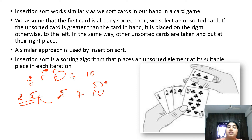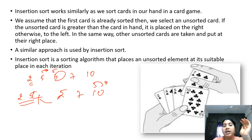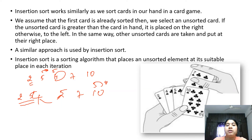So here what you are doing: you are just considering the first element as the sorted element. And from the second element onwards you are doing the sorting technique. You will compare those with the previous elements. If they are in proper order you don't do any swapping. If they are not in proper order you swap them. You will do this procedure till you get a sorted array.